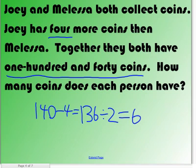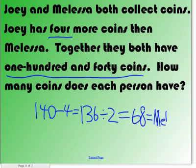Good, 68. And Trent, Joey has 4 more coins than Melissa, so Melissa has 68. So 68 equals Melissa. And then you have to add the 4 again to get Joey's amount of coins.